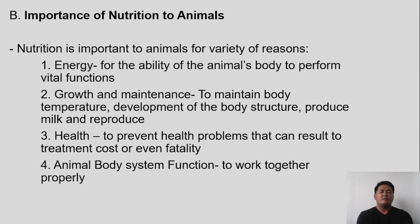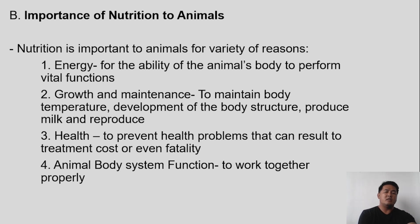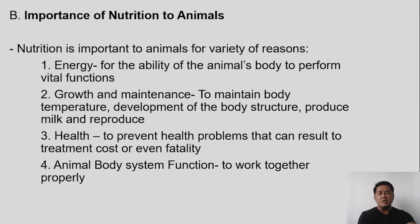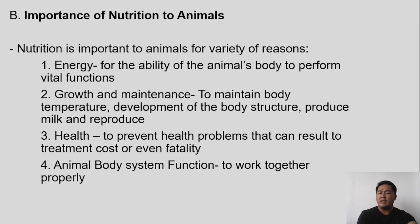Next is growth and maintenance — to maintain body temperature, development of body structure, produce milk, and reproduce. We give nutrition to animals for the reason of growth and maintenance: for the animal to grow, develop body structure, and maintain their health status. If your animals produce milk, you need nutrition. If your animals are breeders doing reproduction, you need nutrition so breeders can perform well in terms of breeding and giving birth.